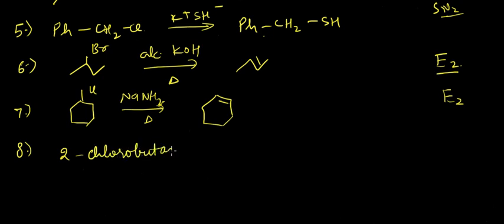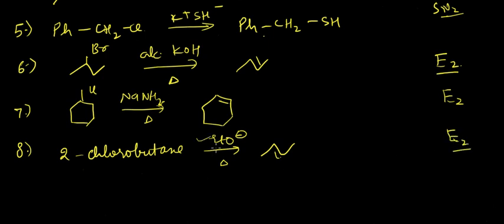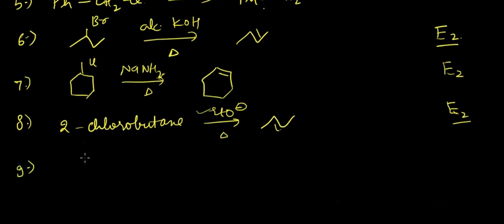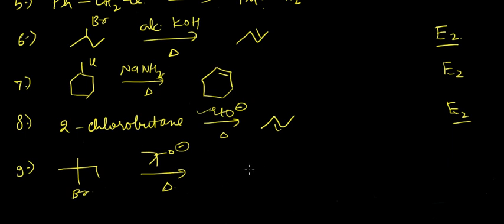Next, 2-chlorobutane reacts with EtO⁻ and is heated, giving an elimination product. This is E2 — a strong base is used and we apply heat. Similarly, with a strong base and heat in another compound, we again get an E2 product.